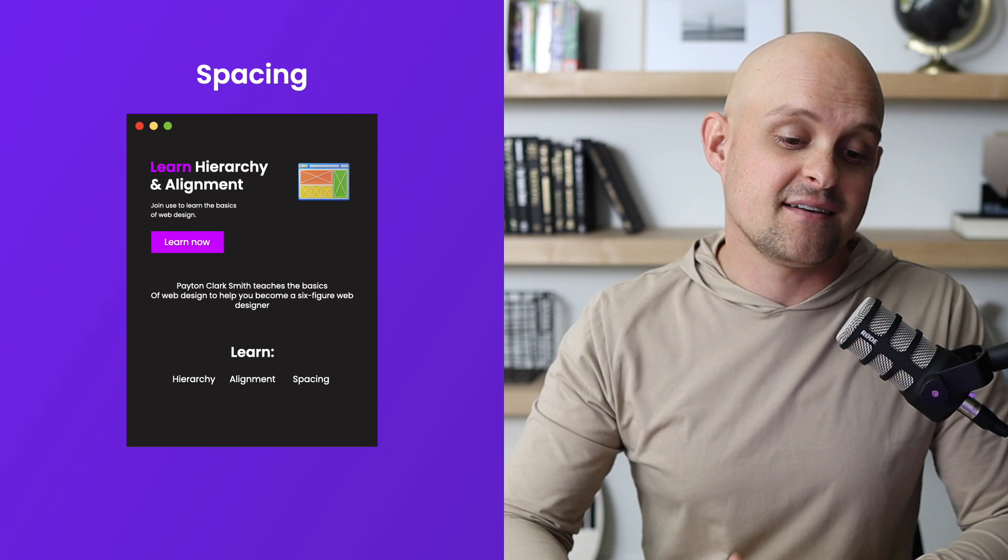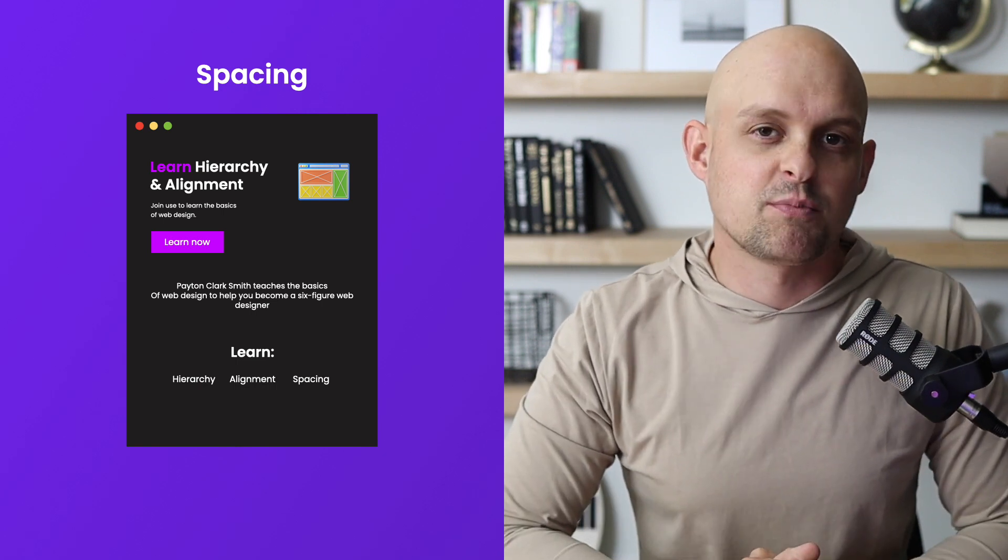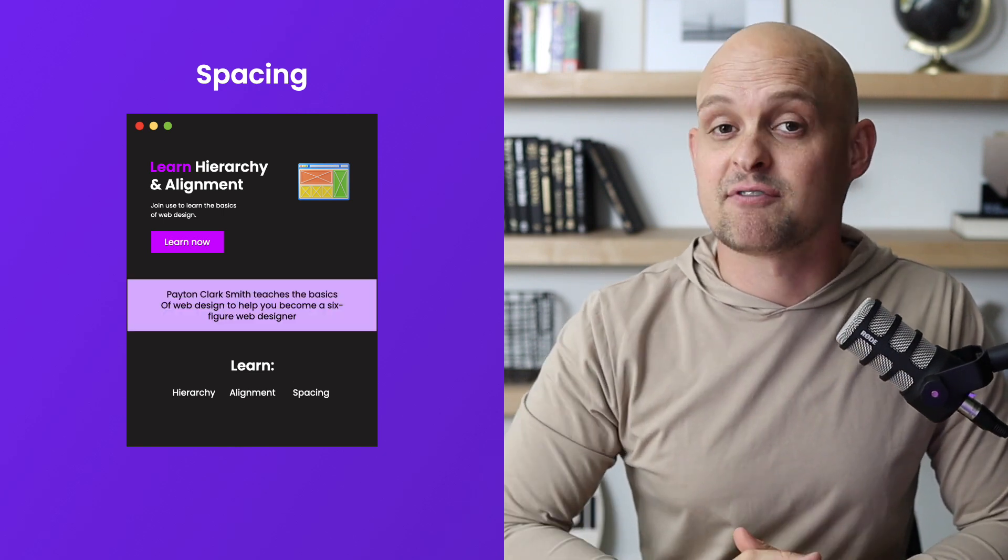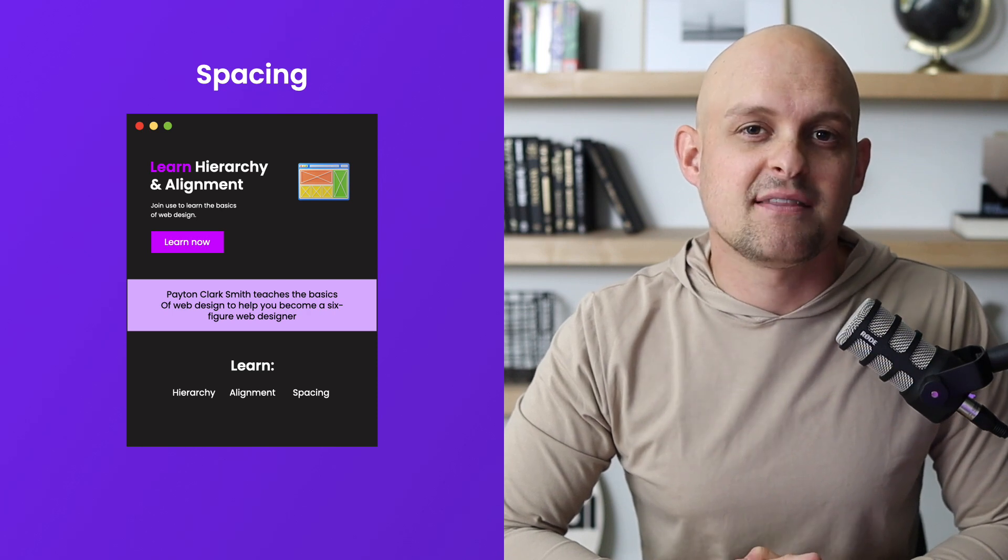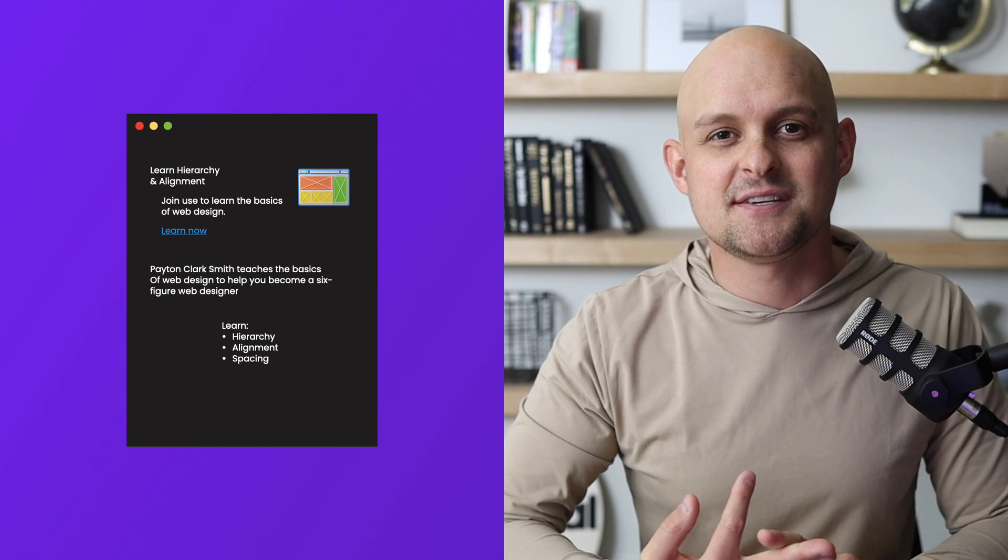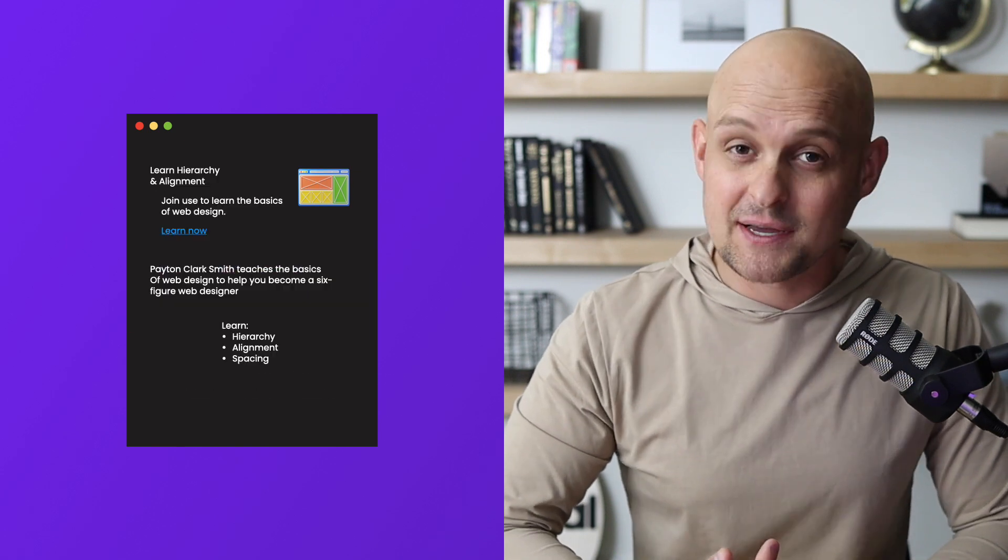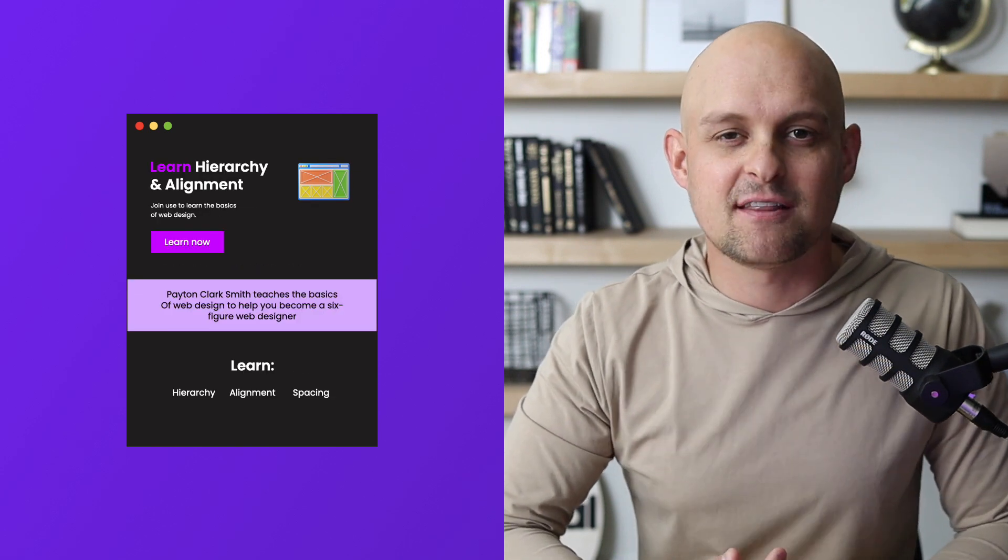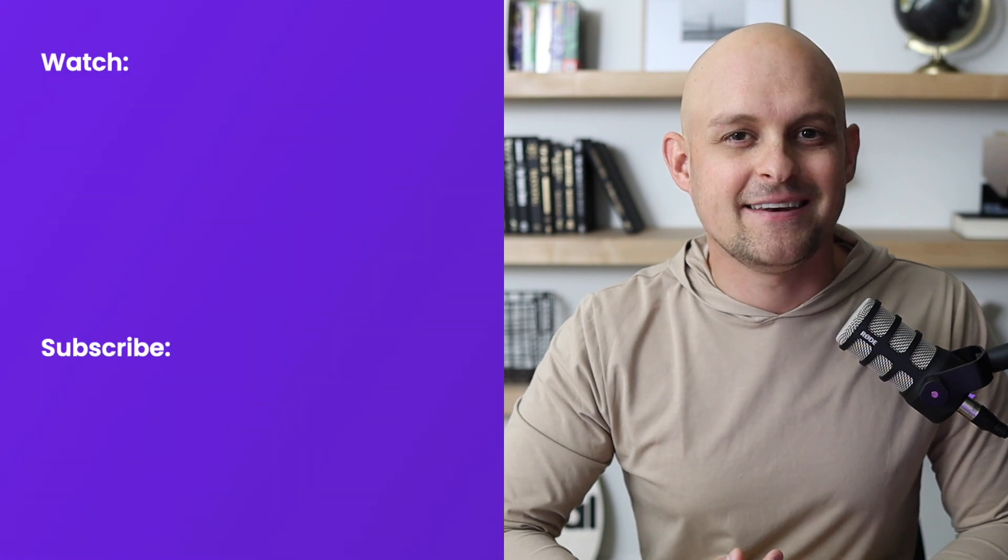And just like that, it's able to breathe a little bit more. You can also break things up into sections and use different background colors to make things look clean. And just like that, using hierarchy alignment and spacing, we've taken a pretty messy website with some basic content thrown in there and made it look pretty nice.